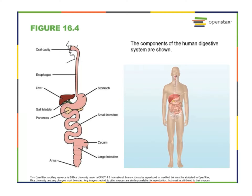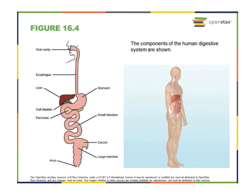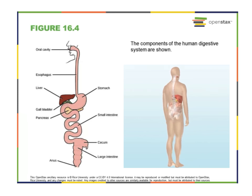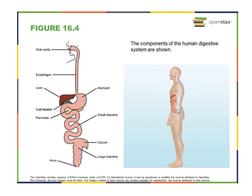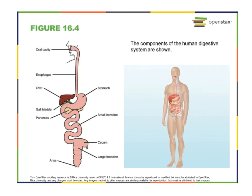The digestive system has a lot of different sub-components, many of which you're probably very familiar with, but there are also some stages that link up to things we've already learned about in this class. Physical and chemical digestion begin in the mouth, or the oral cavity.